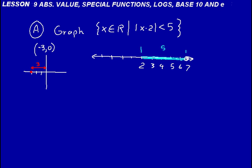Now think about absolute value as a distance. We need also a distance of 5 to the left as well. So that would be 2 minus 5, and we'd go to 1, 0, minus 1, minus 2, and we need one more tick mark there at minus 3. So now we have a distance of 5 to the left as well. Open circle there at minus 3. If we put minus 3 into the absolute value of x minus 2, we'd get minus 3 minus 2 is minus 5, but the absolute value of that is equal to 5. So we put an open circle there because just a tiny bit to the right, we'd have absolute value less than 5.